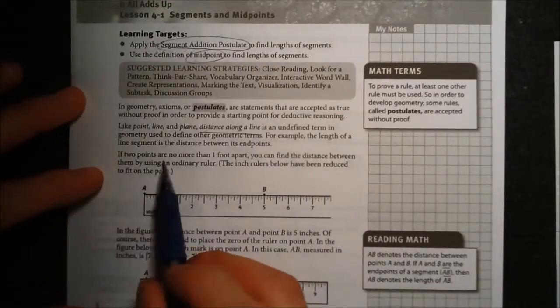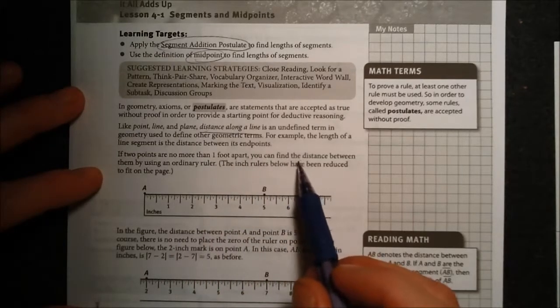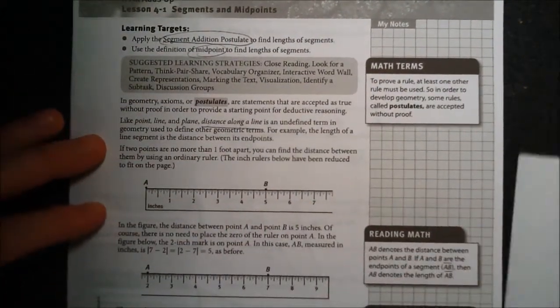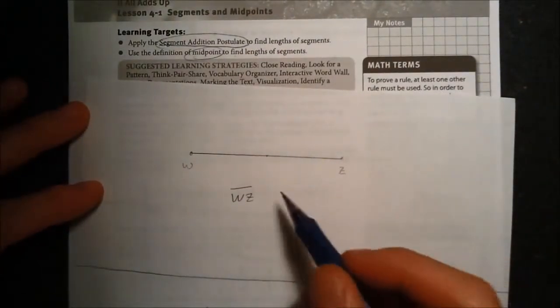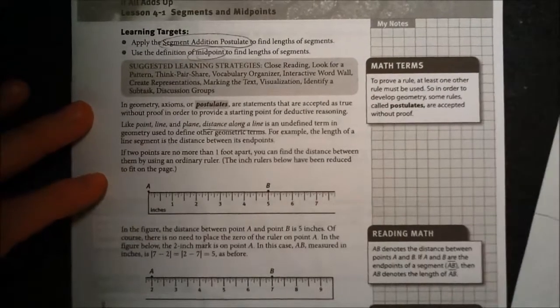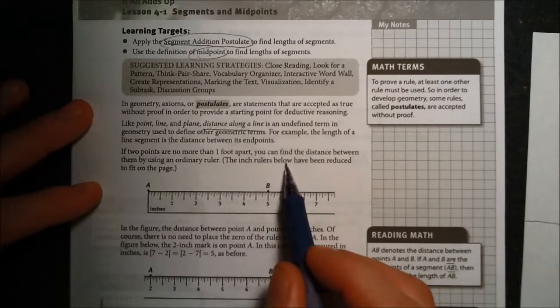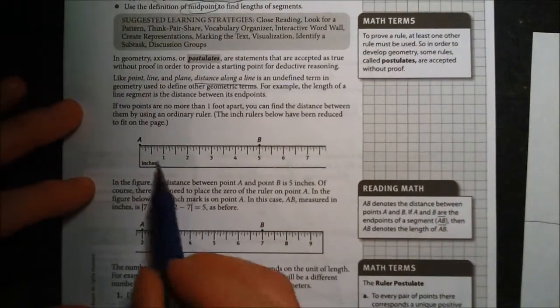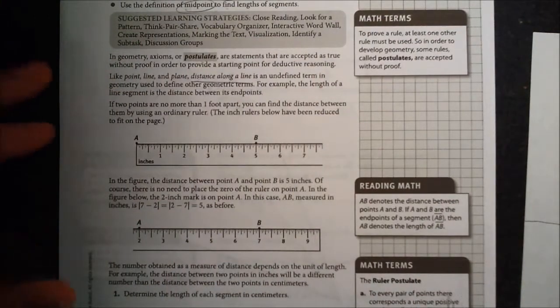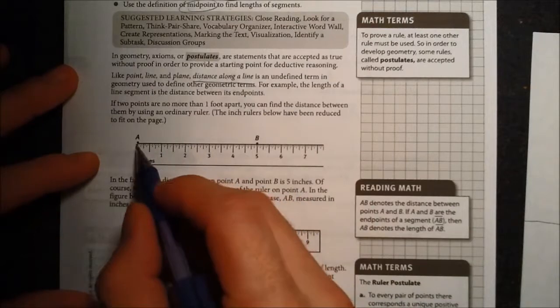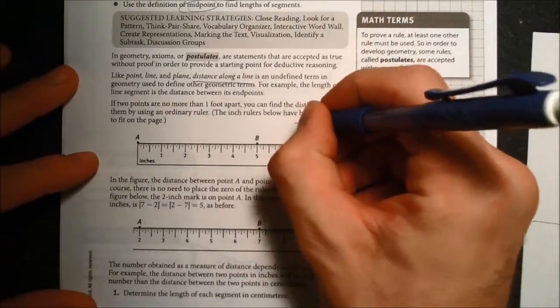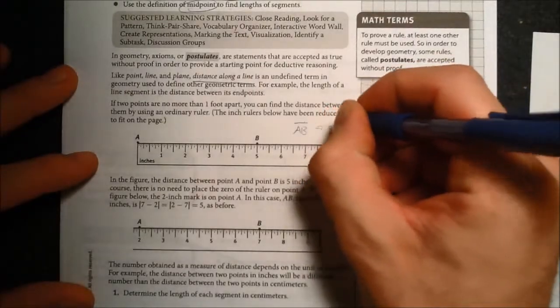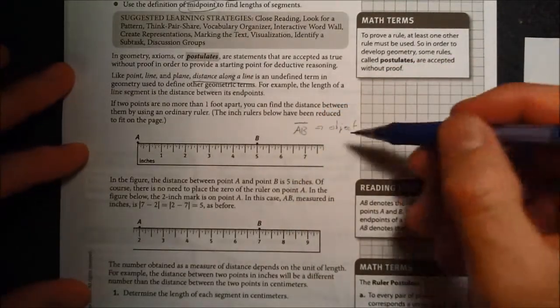The third paragraph reads, if two points are no more than one foot apart, then you can find the distance between them by using an ordinary ruler. So it's just saying if you've got two points, for instance these here, that it's less than a foot, then you can get out a ruler and you can just measure that to determine its length. It says the inch rulers below have been reduced to fit on the page. Basically saying these two diagrams, they're not drawn to scale. Clearly, this is not one inch. It's just shrunk it down so they can fit on the page. So if you look at this diagram here, we have segment AB. When we're talking about the object, we use this notation with the bar above the two endpoints. So this is talking about the object. This is the geometric figure. This has size. This has shape.